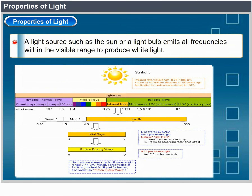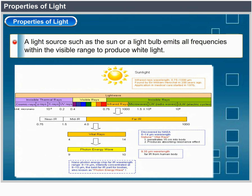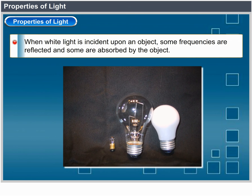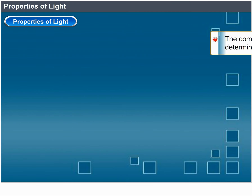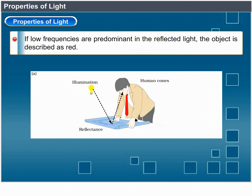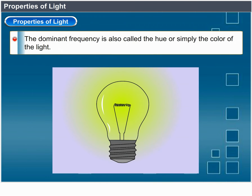A light source such as the sun or a light bulb emits all frequencies within the visible range to produce white light. When white light is incident upon an object, some frequencies are reflected and some are absorbed. The combination of frequencies present in the reflected light determines what we perceive as the color of the object. If low frequencies are predominant in the reflected light, the object is described as red. The perceived light has a dominant frequency or dominant wavelength at the red end of the spectrum. The dominant frequency is also called the hue or simply the color of the light.